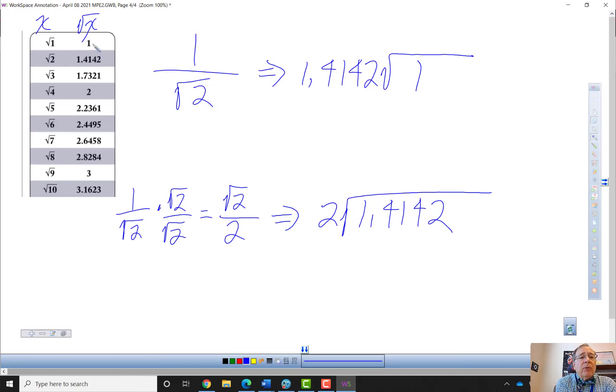If I rationalize the denominator by multiplying by one in the form of square root of two over square root of two, I get this fraction, which gives me this long division problem, which is far easier.